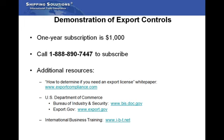This information is designed to assist you in the export process, but it does not replace the need for an understanding of the export laws of the United States. You can get a basic understanding of the export control process by downloading the free white paper called How to Determine if You Need an Export License, available on the homepage of this website. You can also visit the Bureau of Industry and Security website for additional training, and our sister company, International Business Training, offers books, self-study classes, seminars, and webinars on the export process. Thank you for watching and thank you for your interest in Shipping Solutions Online Compliance Tools.